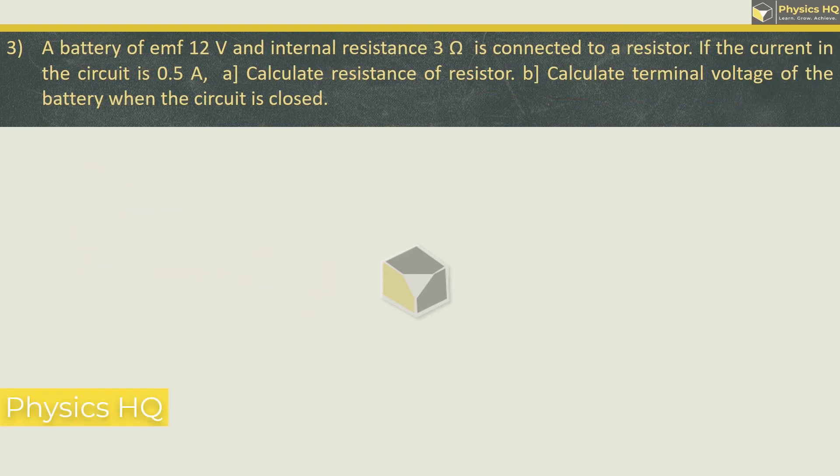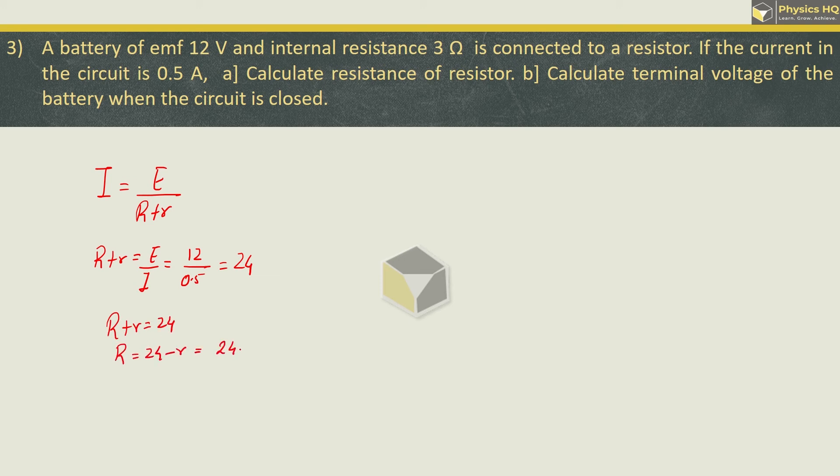A battery of 12V and internal resistance 3 ohm is connected to a resistor. If the current of the circuit is 0.5 ampere, calculate the resistance of the resistor. So current is E by R plus r, or you can say R plus r is E by I. EMF is 12, current is 0.5, which is half, so 2 will go up, so it becomes 24. So we got R plus r equal to 24 or R is 24 minus small r. 24 minus r is given as 3 ohm, so we got the resistor's resistance as 21 ohm.